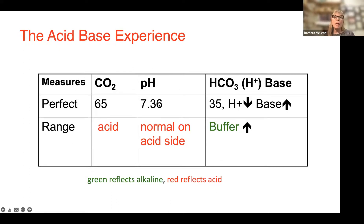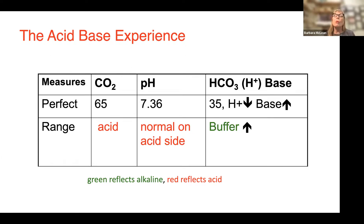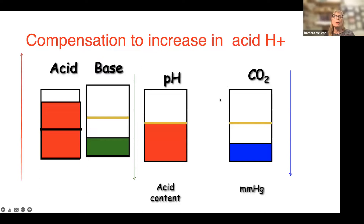You would never say 'metabolic alkalosis and respiratory acidosis' — that does not make any sense. We need to figure out what the problem is, and the problem is always defined by the direction of the pH. The pH may be in the range of normal, but you still have a problem — and you only know that by looking at your CO2 and your bicarb. CO2 is up, bicarb is also up — meaning metabolic acid is down. CO2 as an acid is up; metabolic acid H+ is down because bicarb is up.